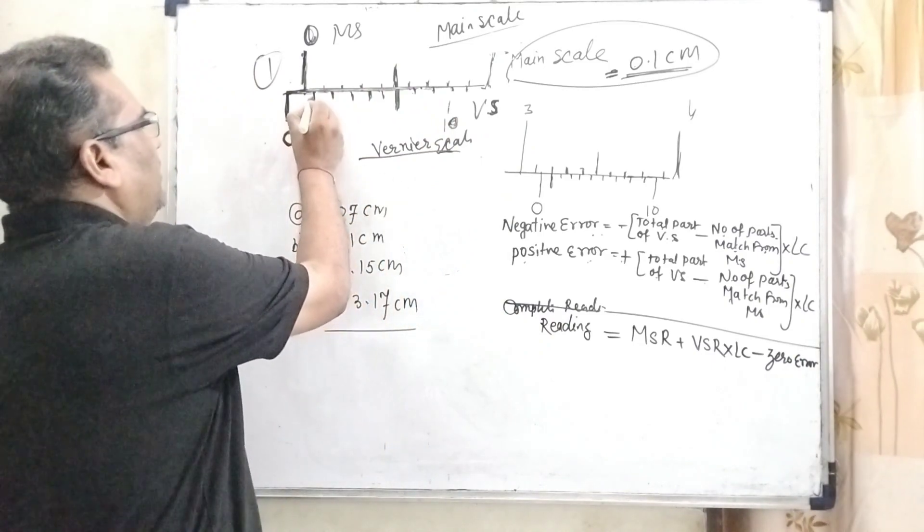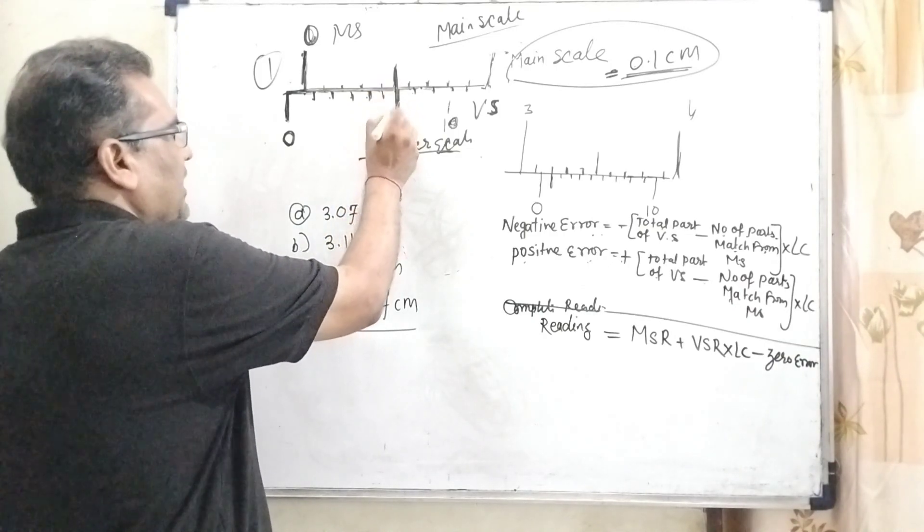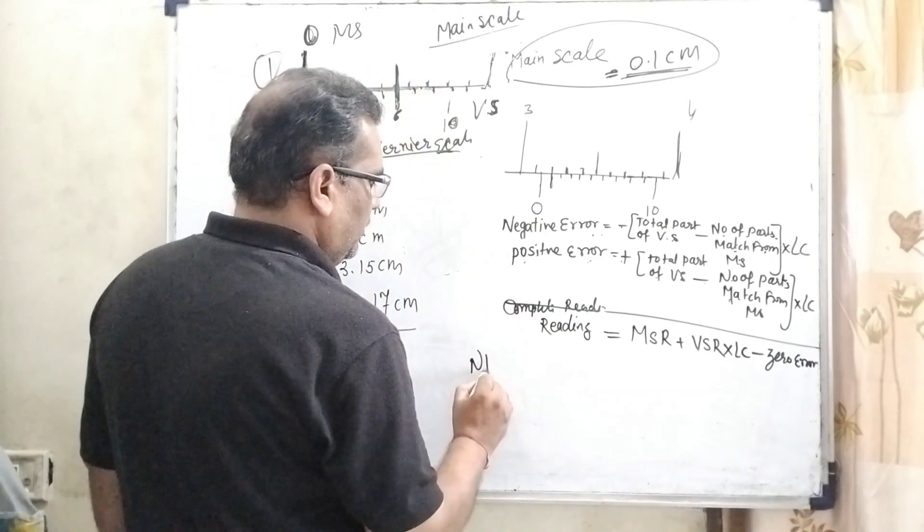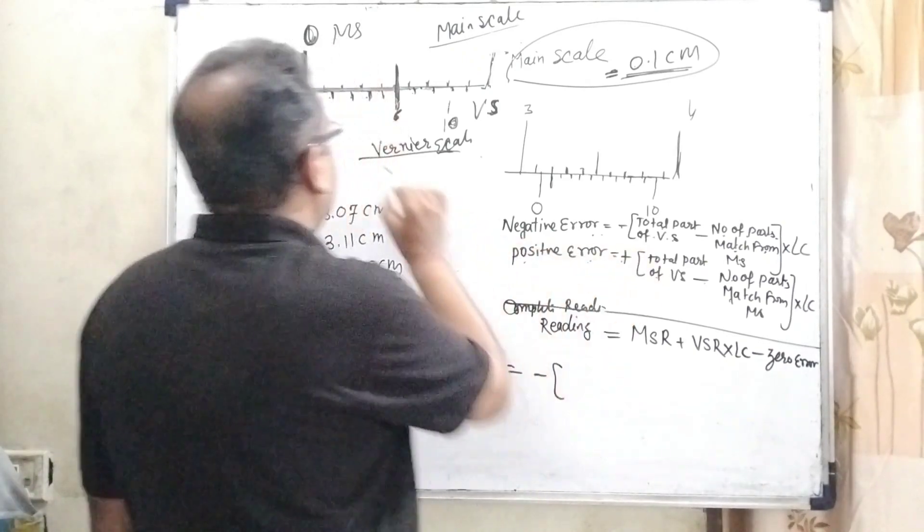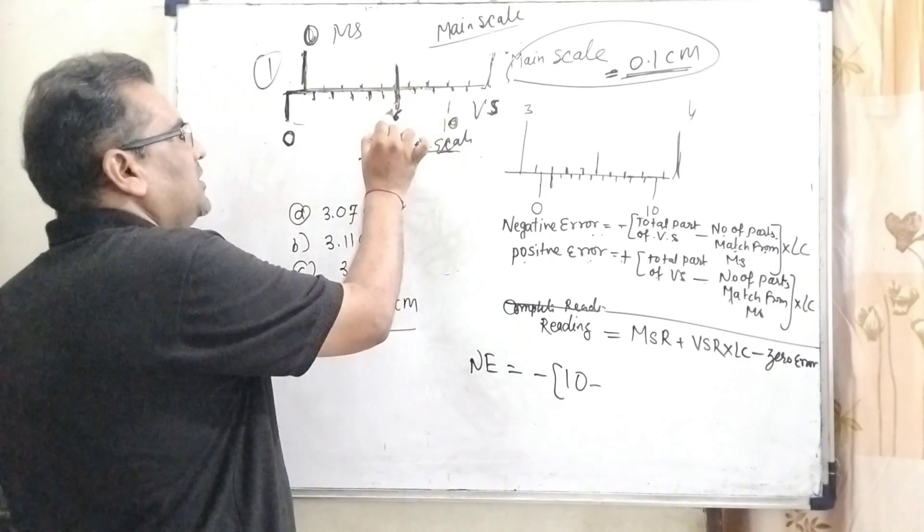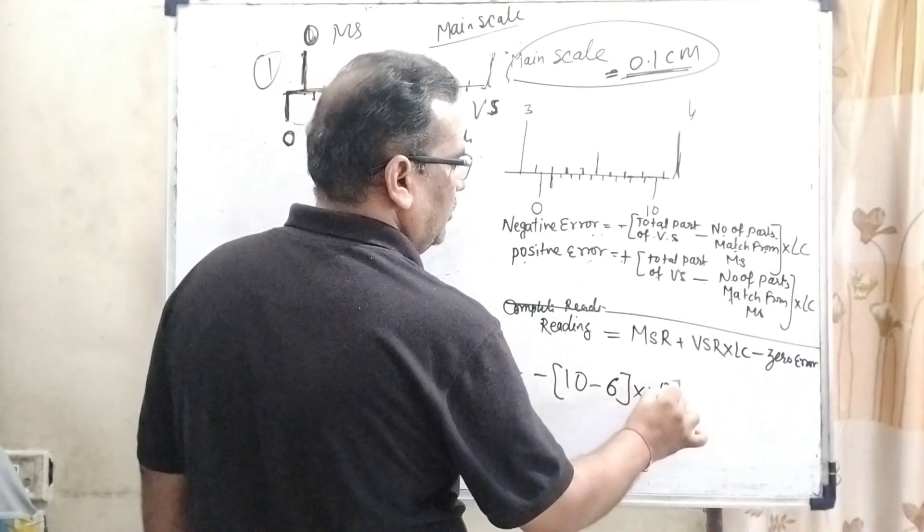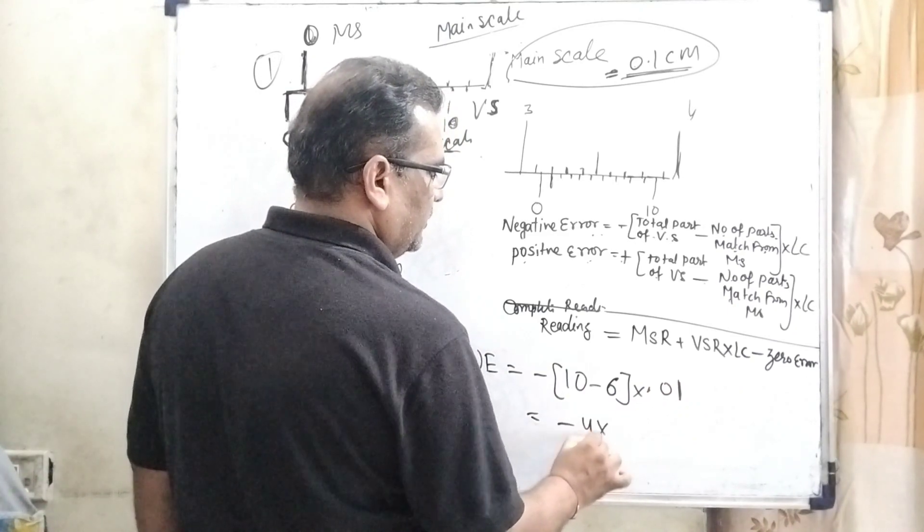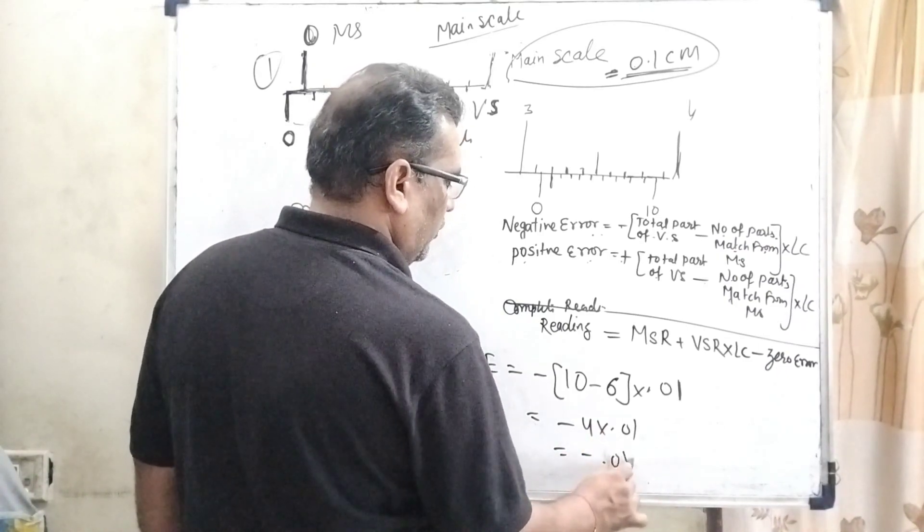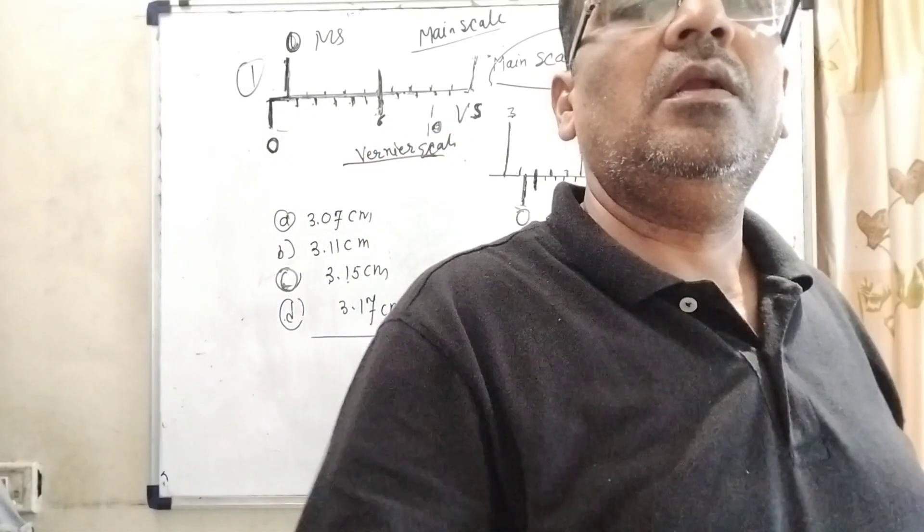And so therefore we can see that here 1, 2, 3, 4, 5 and 6. Here we can see that 6 parts are coincident. We can say that they match. So here, negative zero error equals minus (total parts - here total part is 10, and the sixth part of this Vernier scale is matching to the main scale). So 10 minus 6 into least count is 0.01. So here minus 4 into 0.01, that is minus 0.04. That is the negative error. So here we get negative error.